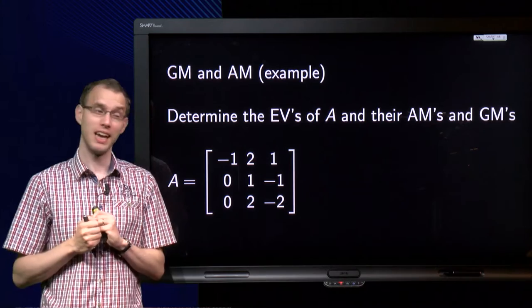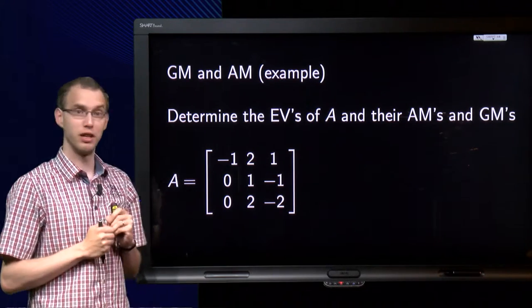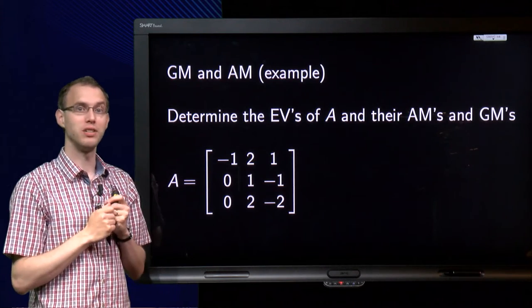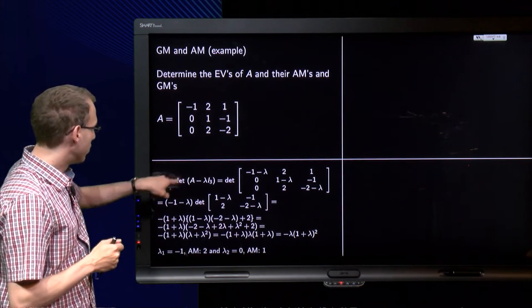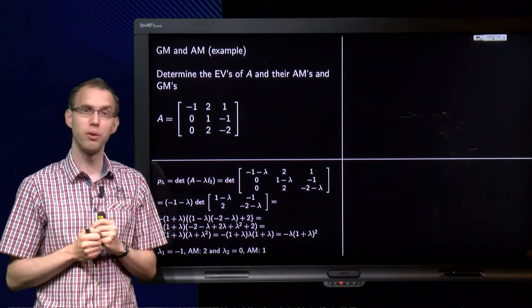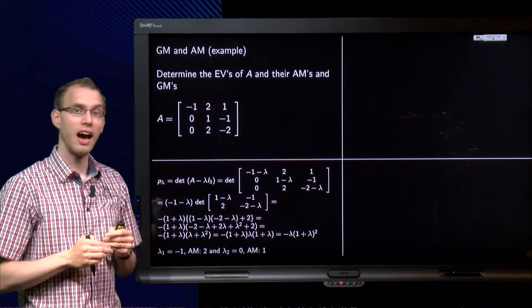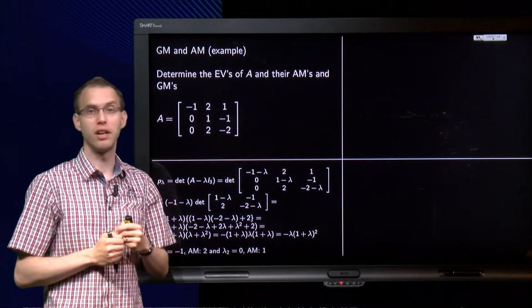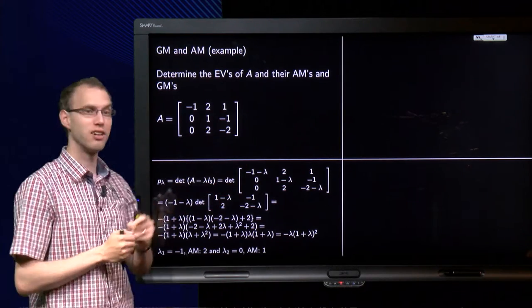So here we have a matrix A, and the question is, determine the eigenvalues, their algebraic multiplicities and their geometric multiplicities. First of all we need to compute the eigenvalues. So we compute the determinant of A minus lambda times the identity matrix, we compute the characteristic polynomial. Here we have our A minus lambda I3. And of course we can compute the determinant by expanding along the first row, that would be pretty stupid, we better use the first column instead because of the nice zeros here.